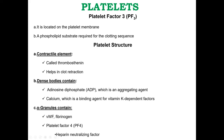The structure of platelets: number one, a contractile element called thrombosthenin which helps in clot retraction. Dense bodies contain adenosine diphosphate (ADP), which is an aggregating agent, and calcium, which is a binding agent for vitamin K dependent factors. Alpha granules contain von Willebrand factor, fibrinogen, platelet factor 4, and a heparin neutralizing factor.